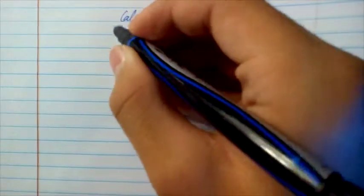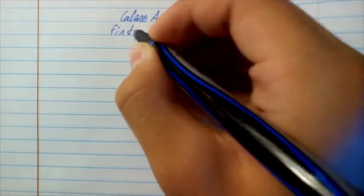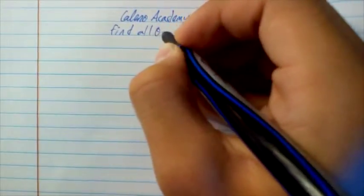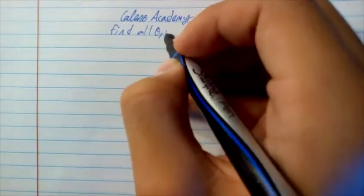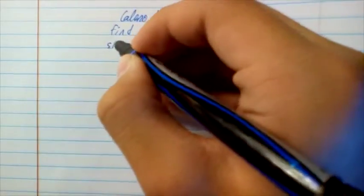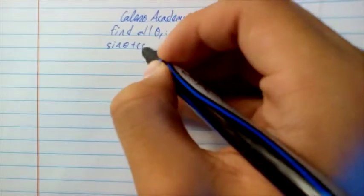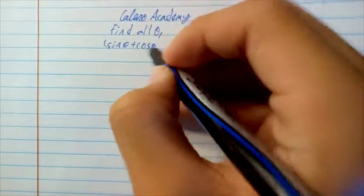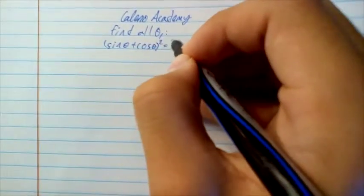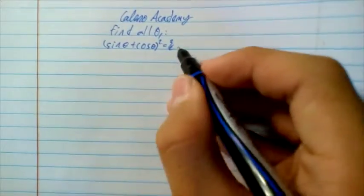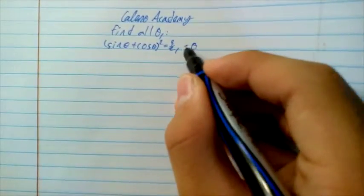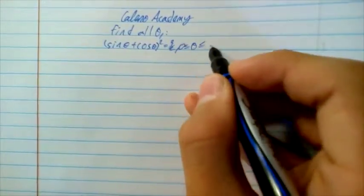The question states: find all theta such that sin theta plus cos theta all squared is equal to 3/2, where theta is bounded below by 0 and above by 2π radians.